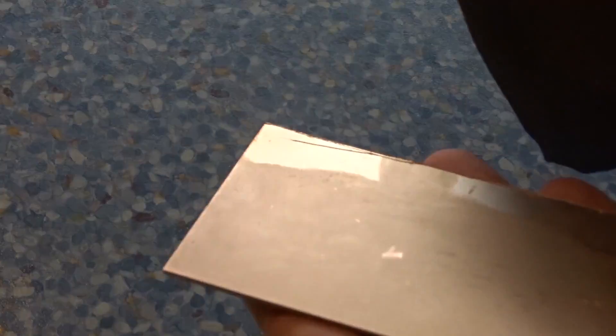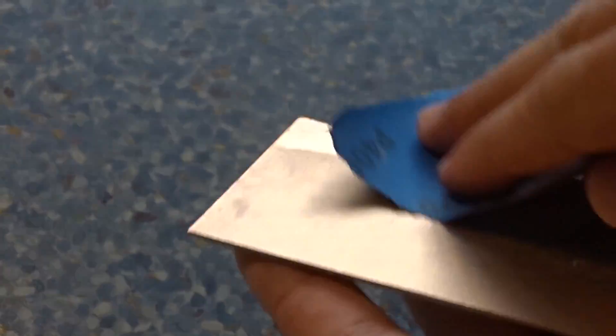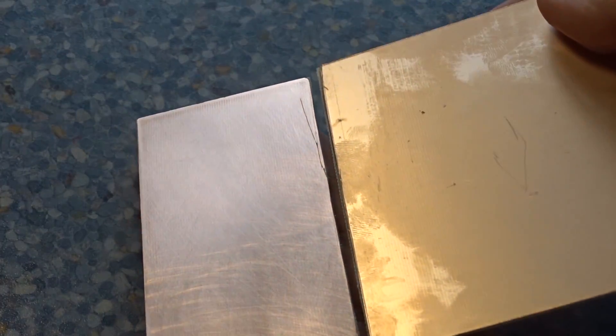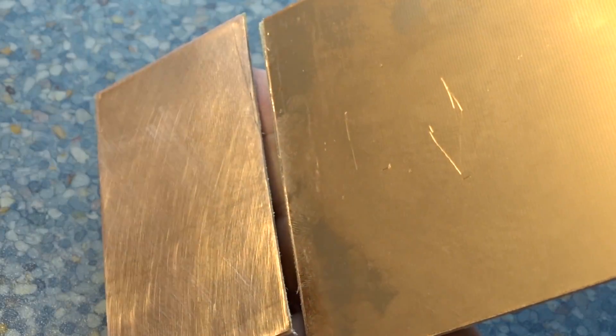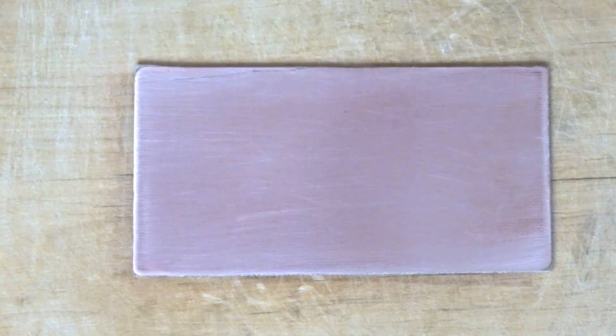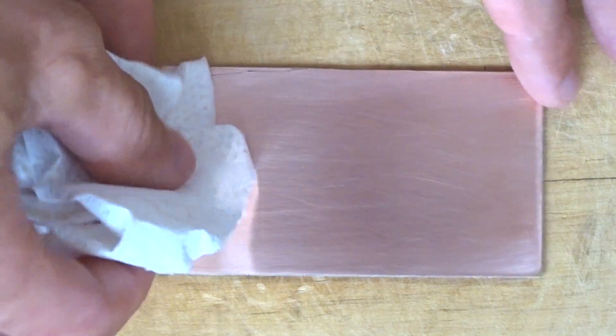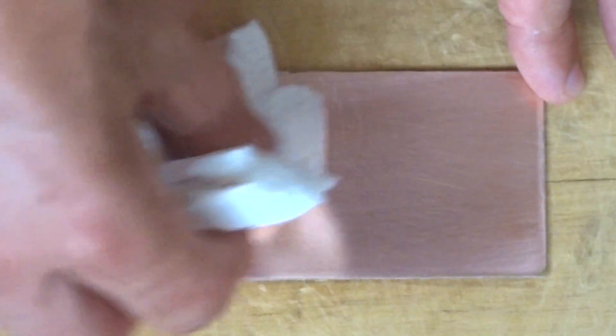Using 400 grit sandpaper helps to remove all the debris and oil from the board and keeps it clean for toner transfer method. If you skip this step you will end up with bad results. Before applying some heat, I recommend one last time to wipe all the dust with a paper towel.